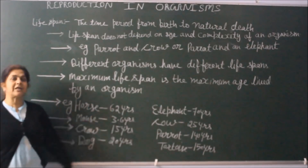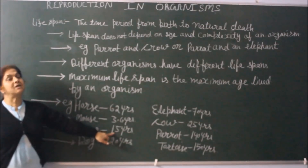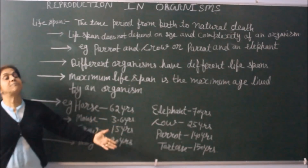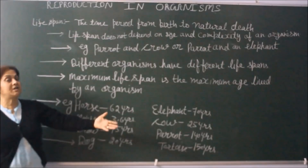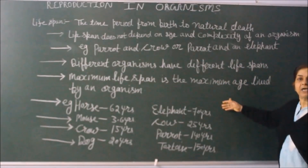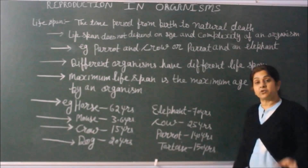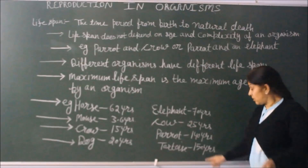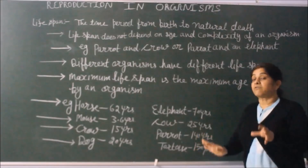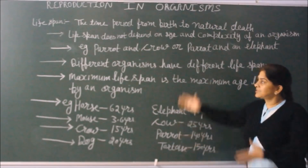Some specific lifespans to remember: horse — 62 years; mouse — 3.6 years; crow — 15 years; dog — average 20 years, maximum up to 25–30 years; elephant — 70 years; parrot — 140 years; and tortoise, a slow-moving organism, has an average lifespan of 150 years and can survive up to 200–250 years maximum. This concludes our discussion on lifespan.